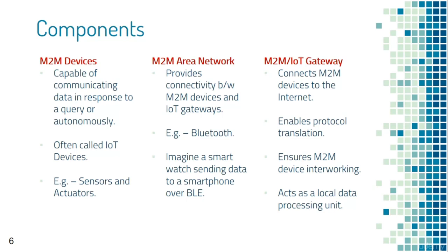The second component is the M2M area network, which provides connectivity between the M2M devices and IoT gateways. Think of a scenario where a smartwatch is sending data to a smartphone over Bluetooth Low Energy. Here Bluetooth acts as the M2M area network.